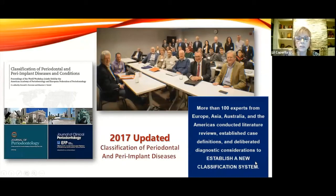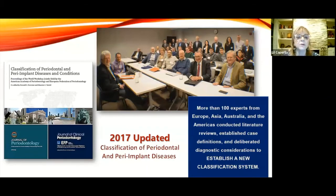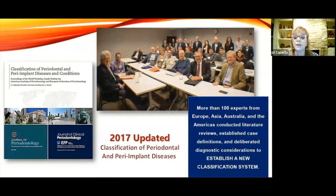In 2017, the classification of periodontal and peri-implant diseases was updated. Since the 90s, we've been able to classify our patients and come up with a formative diagnosis based on radiographs, probe readings, mobility, recession, and all these parameters. But more than 100 experts from Europe, Asia, Australia, and the Americas conducted a very extensive literature review and established different definitions.